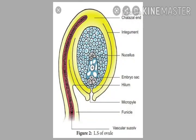Now we discuss the structure of the ovule, or megasporangium. The ovule is a small globular structure with two main parts: a stalk and a body. The stalk is called the funicle. The funicle has a vascular strand of xylem and phloem tissue for providing nutrients to the ovule. The point or junction at which the stalk is connected to the body of the ovule is called the hilum.